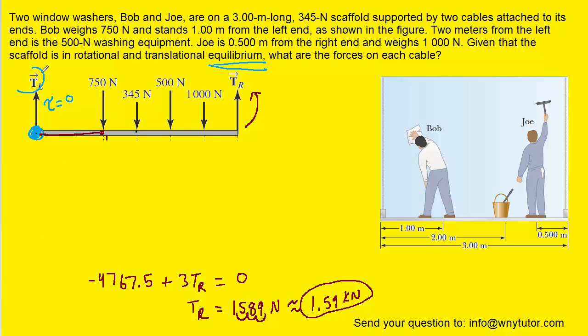Now we can find the force marked T sub L by noting that the sum of the forces in the y direction is equal to zero. Again, that's because the platform is in equilibrium. So we're going to add together all the forces and set that equal to zero. Just note that these forces, the four middle forces, are pointing down so they will be negative. Now when we combine all the like terms and then add the result over to the other side, we can see that the force marked T L is approximately equal to 1006 newtons. In kilonewtons, we would have 1.01 kilonewtons.